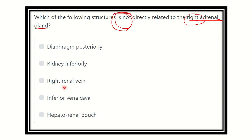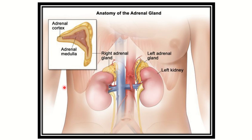We can see the adrenal gland lies just above the kidney on both the right and left side. The right adrenal gland is located superior to the right kidney, so that option is correct. We can also see this adrenal gland is related to the abdominal aorta — the right adrenal gland is related to the abdominal aorta.